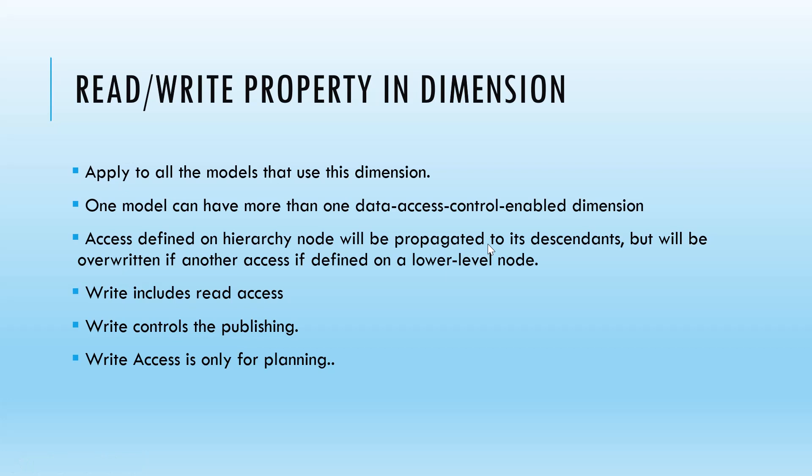Then, the rewrite property for a dimension can apply to all models that use that dimension. One model can have more than one data access control enabled dimension. Access defined on a hierarchy node will be propagated to its descendants, but will be overwritten if defined on a lower level node. It can include read access, write control, and publication — where write access is only for planning.